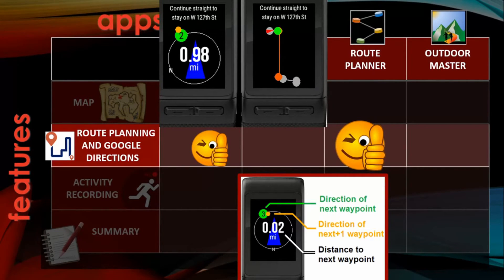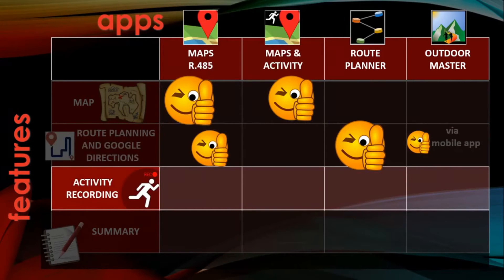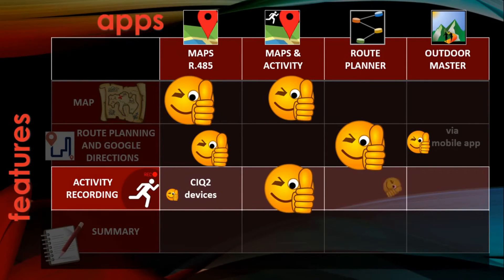The Outdoor Master cannot request directions via its menu, but it also has a companion app. All apps can record activities, but Maps R485 does not support this possibility for all watches. The other devices should use the other apps.